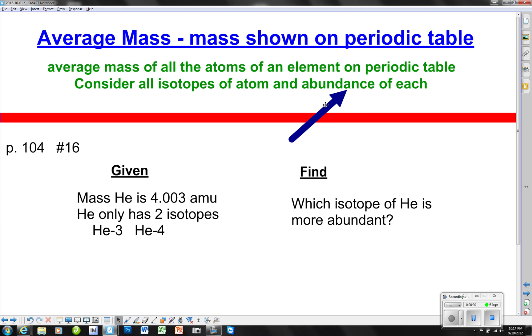In the practice problem on page 104, number 16, the mass of helium is given as 4.003 AMUs (atomic mass units). An atomic mass unit is the mass of one proton, which is also equal to the mass of one neutron. In helium's case, we have two protons and two neutrons for a total of 4 AMUs.